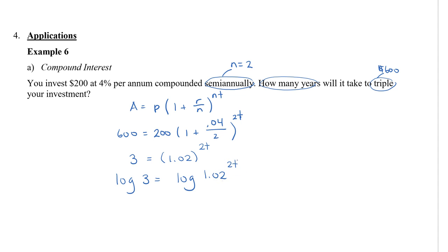I'm going to put log 3 equals log 1.02 to the power of 2T. The reason we're logging is because our variable is an exponent, we want to move it to the base. When we use our log on both sides, we can use our power law to move the 2T to the front. So now we have log 3 equals 2 times T times log 1.02.